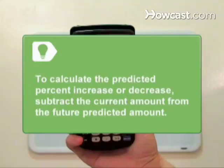To calculate the predicted percent increase or decrease, subtract the current amount from the future predicted amount.